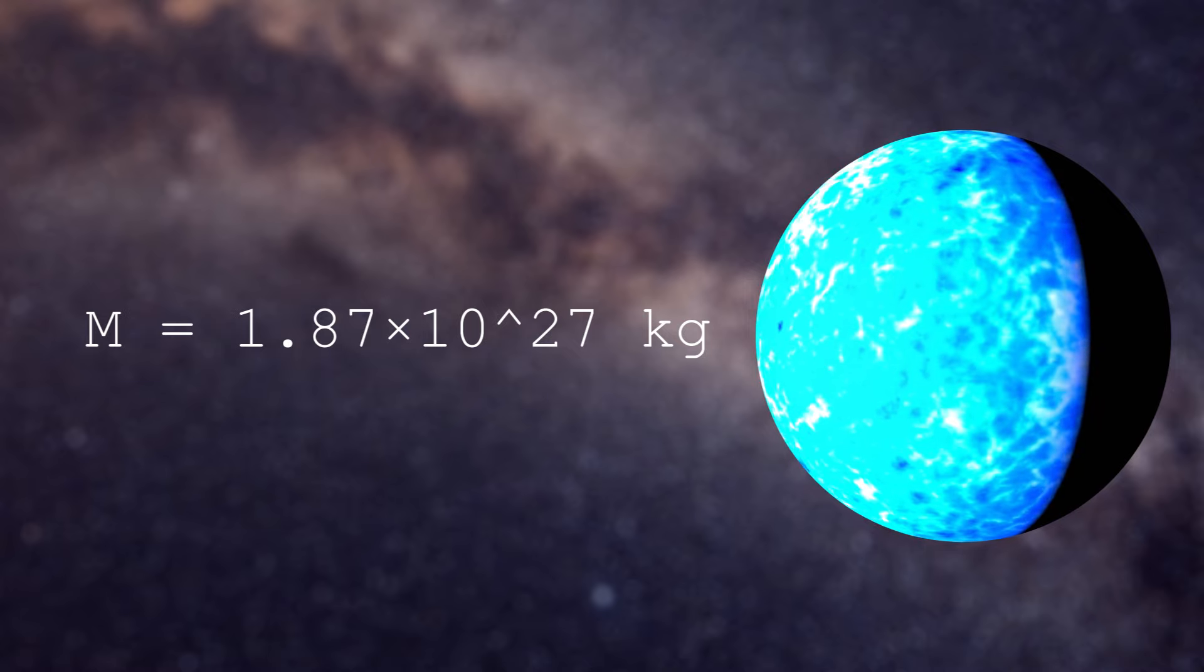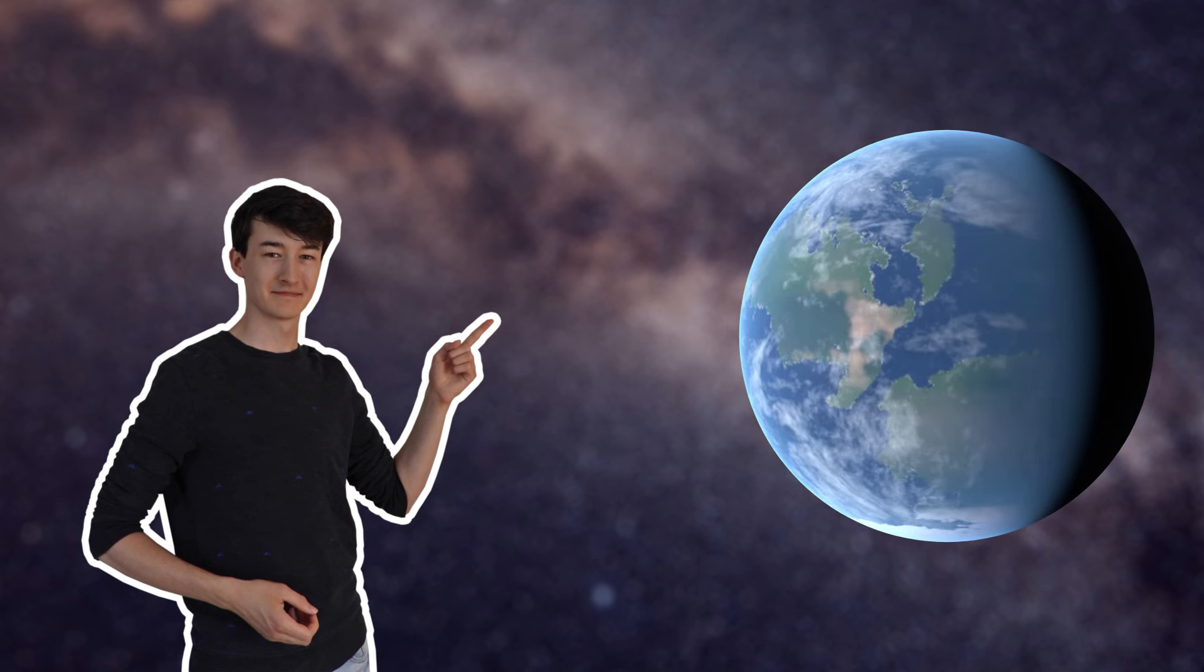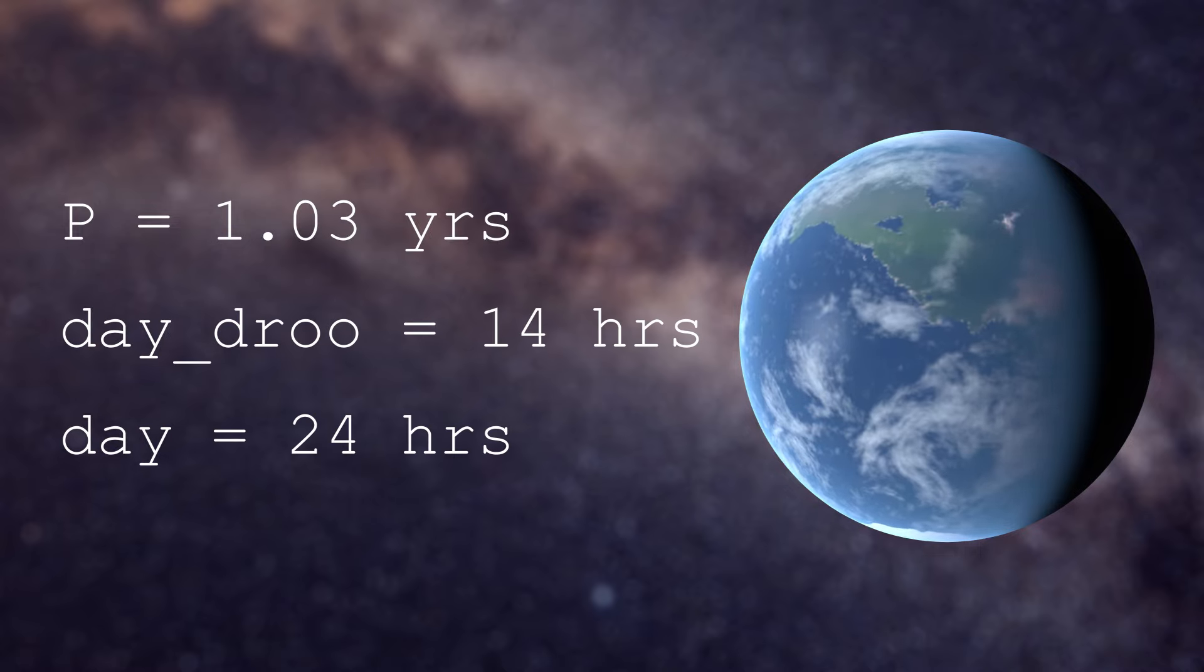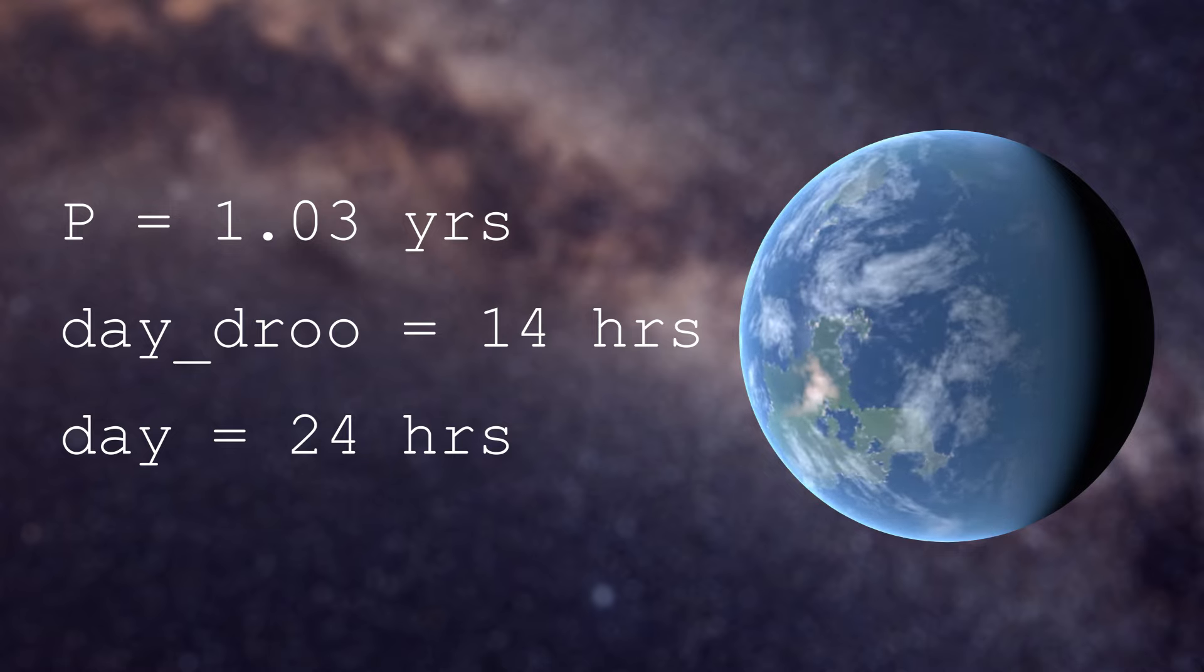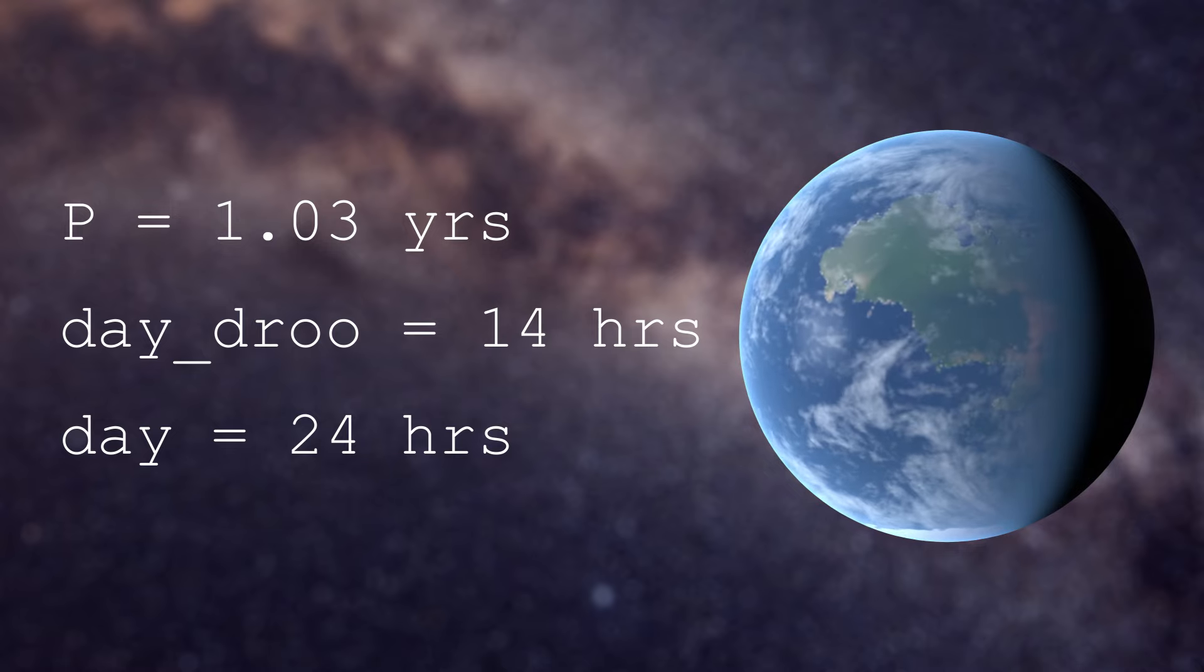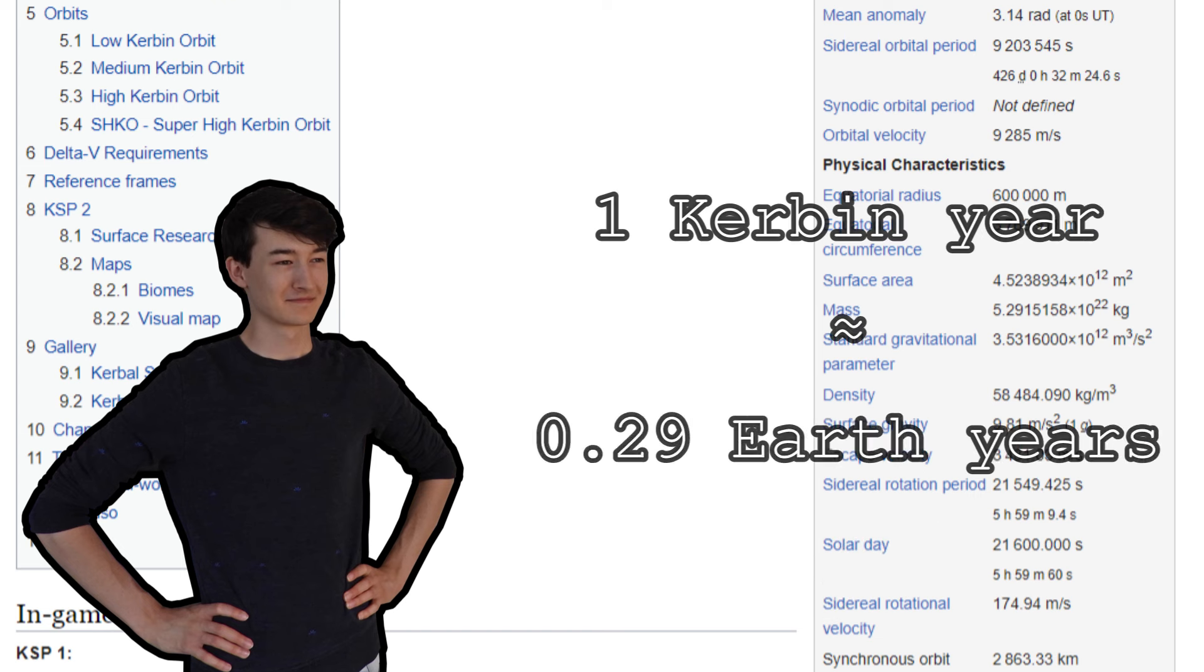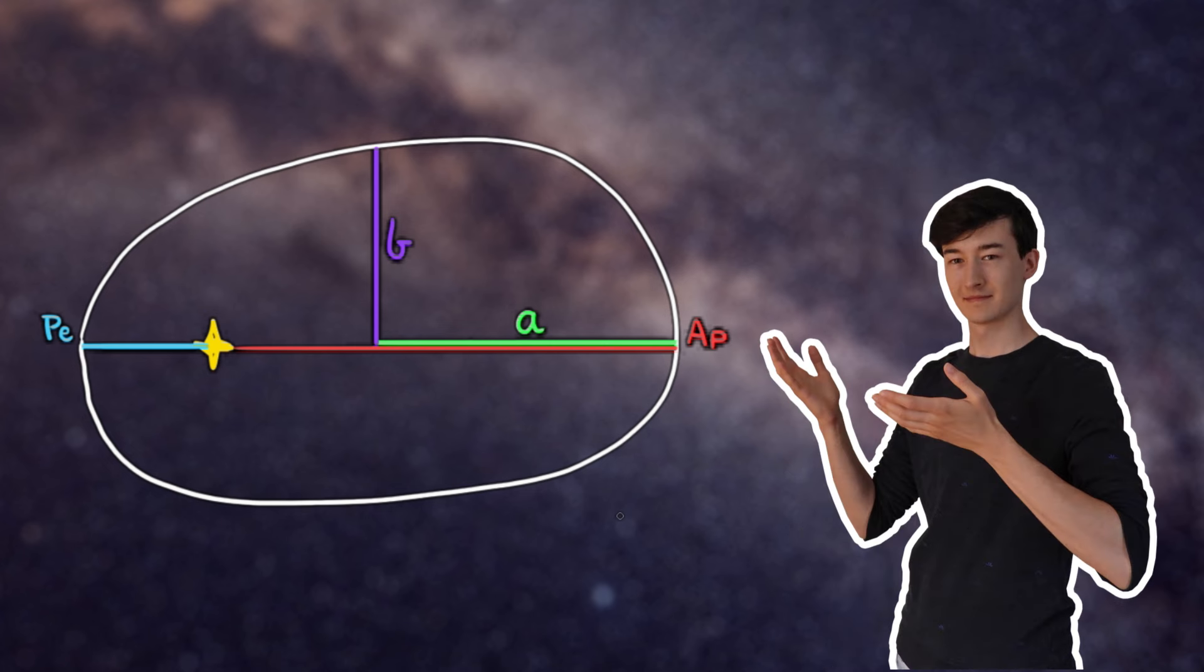But for today I'm going to focus on just a few planets. Like, do their orbits make sense? In the case of Drew, the game's Earth equivalent, we know its orbital period, which is 1.03 years. Even though a Drew day is 14 hours, days in the game are expressed in 24-hour cycles. So this is actually 1.03 Earth years, which is different from KSP, where Kerbin's year is 426 days, with each of those days being just below six hours, making a Kerbin year around 106 Earth days, or 0.29 Earth years. Okay, let's get back on track.